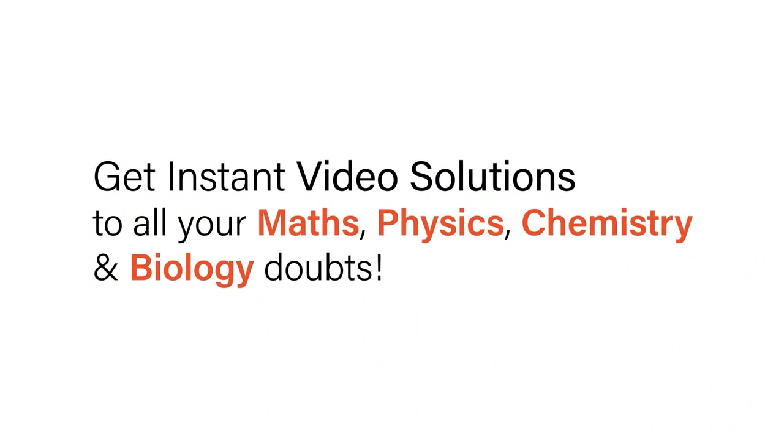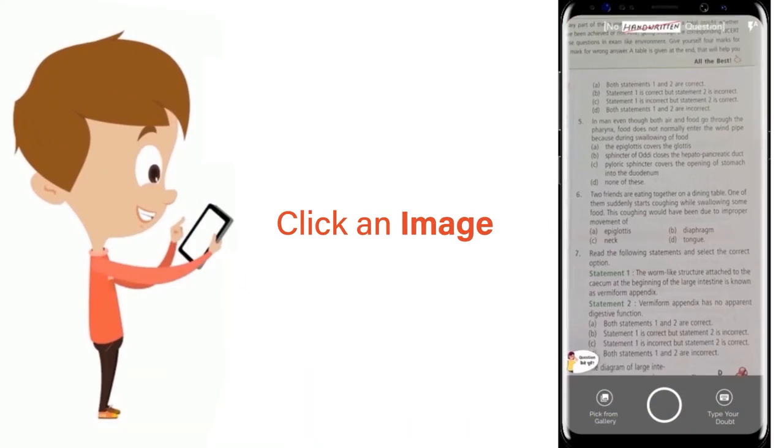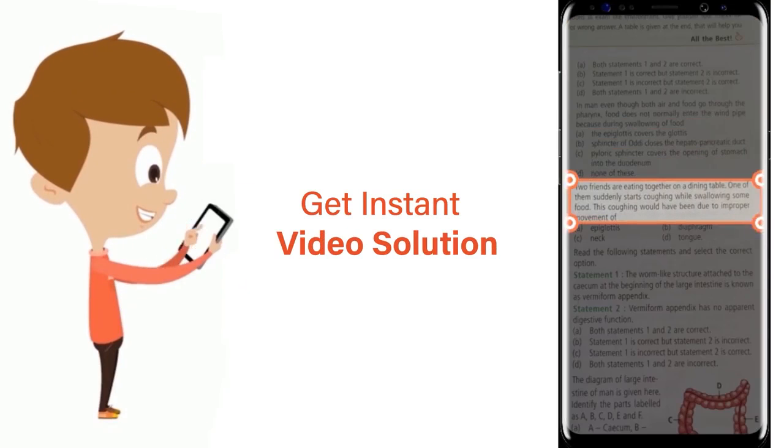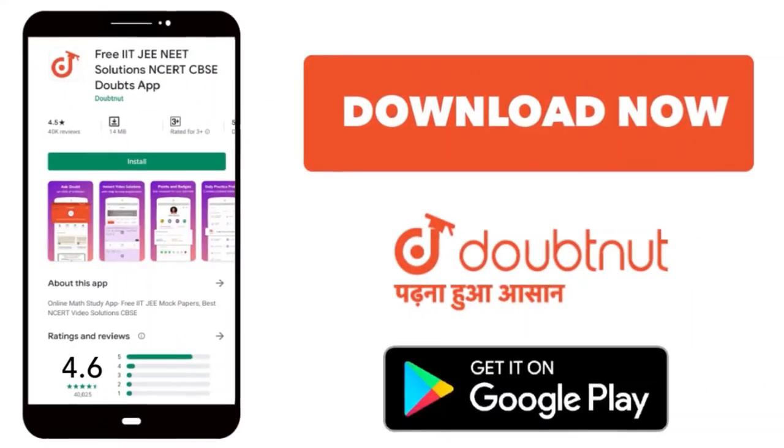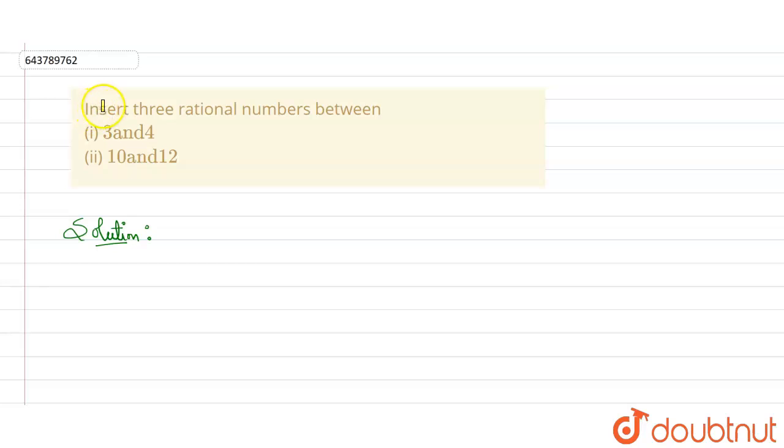With Doubtnet, get instant video solutions to all your maths, physics, chemistry and biology doubts. Just click the image of the question, crop the question and get instant video solution. Download Doubtnet app today. Hello everyone, in this question we have to insert three rational numbers between 3 and 4, and 10 and 12.